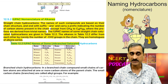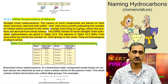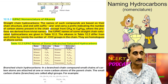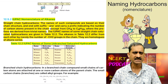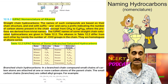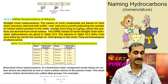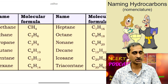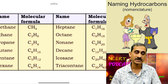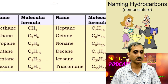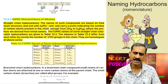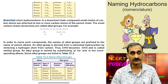Table 12.2 — IUPAC names of some unbranched saturated hydrocarbons: methane (CH4), ethane (C2H6), propane (C3H8), butane (C4H10), pentane (C5H12), hexane (C6H14), heptane (C7H16), octane (C8H18), nonane (C9H20), decane (C10H22), docosane (C20H42), and triacontane (C30H62).